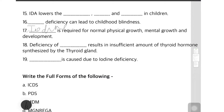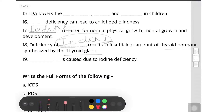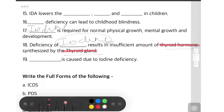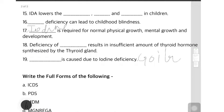Question 18: deficiency of dash results in insufficient amount of thyroid hormone synthesized by the thyroid gland. The answer is iodine — iodine deficiency causes less secretion of thyroid hormone. Question 19: dash is caused due to iodine deficiency. The answer is goiter.